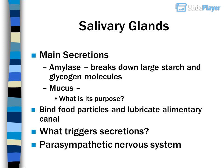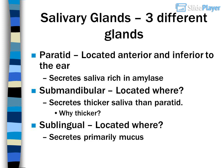Salivary glands: main secretions — what triggers secretions? Amylase breaks down large starch and glycogen molecules. Mucus — what is its purpose? To bind food particles and lubricate the alimentary canal. What triggers secretions? The parasympathetic nervous system.